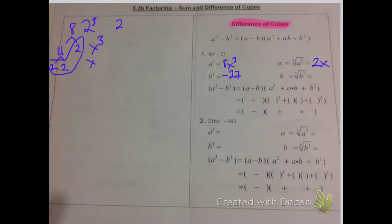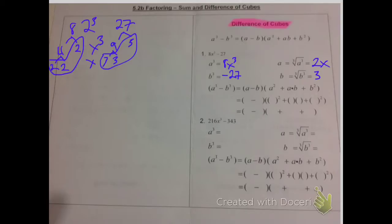Then you do the same thing for 27 — the negative will come back later. Factor tree 27: you get 9, then 3 and 3, and then 3, giving you one group of 3. So 3 cubed equals 27, meaning b equals 3. Now having found the values of a and b, you plug them into the equation: a cubed minus b cubed equals a minus b, times a squared plus a times b plus b squared.